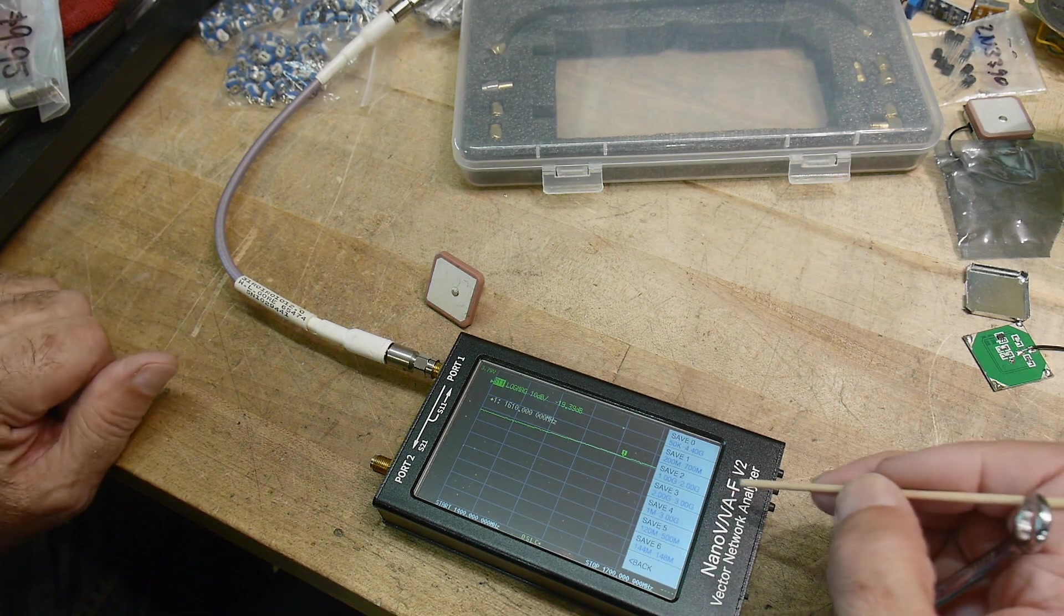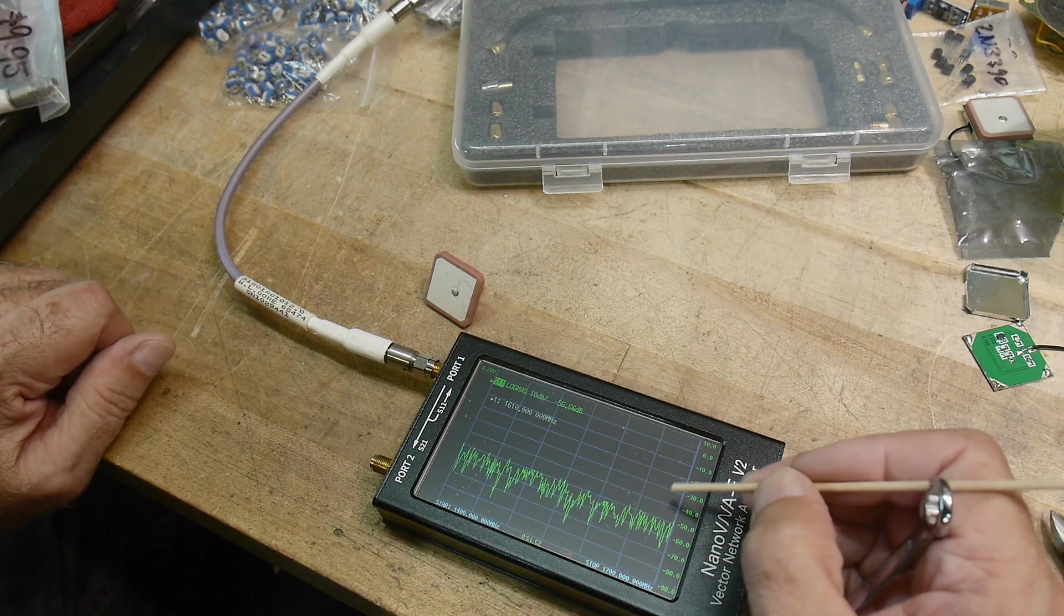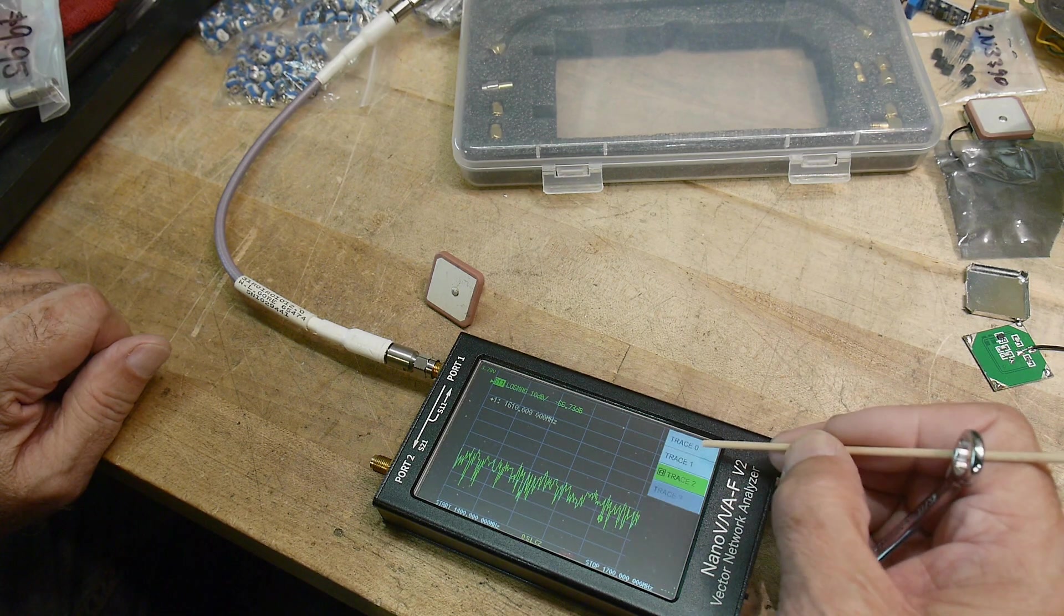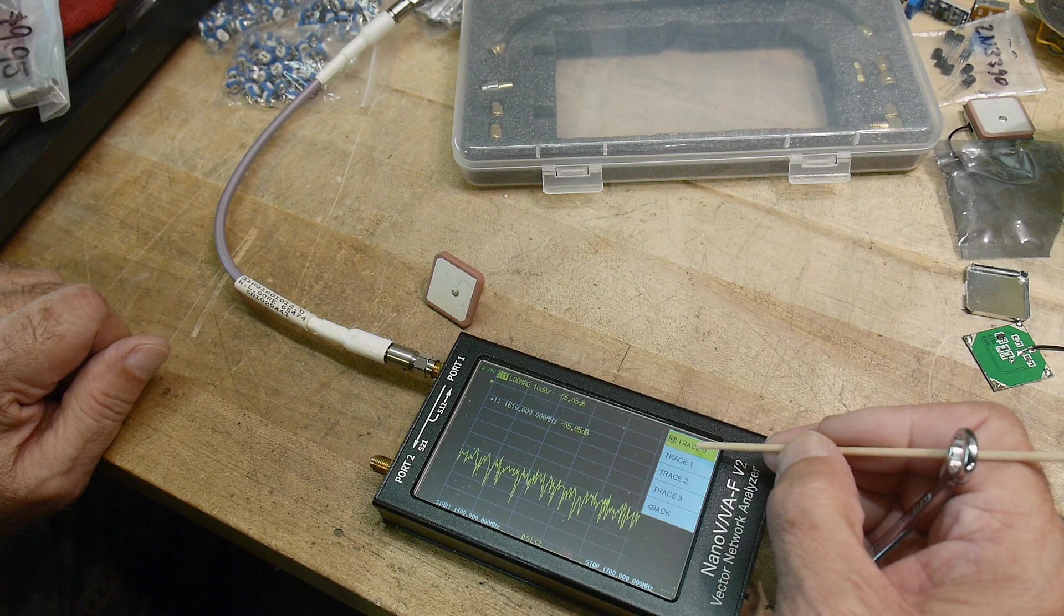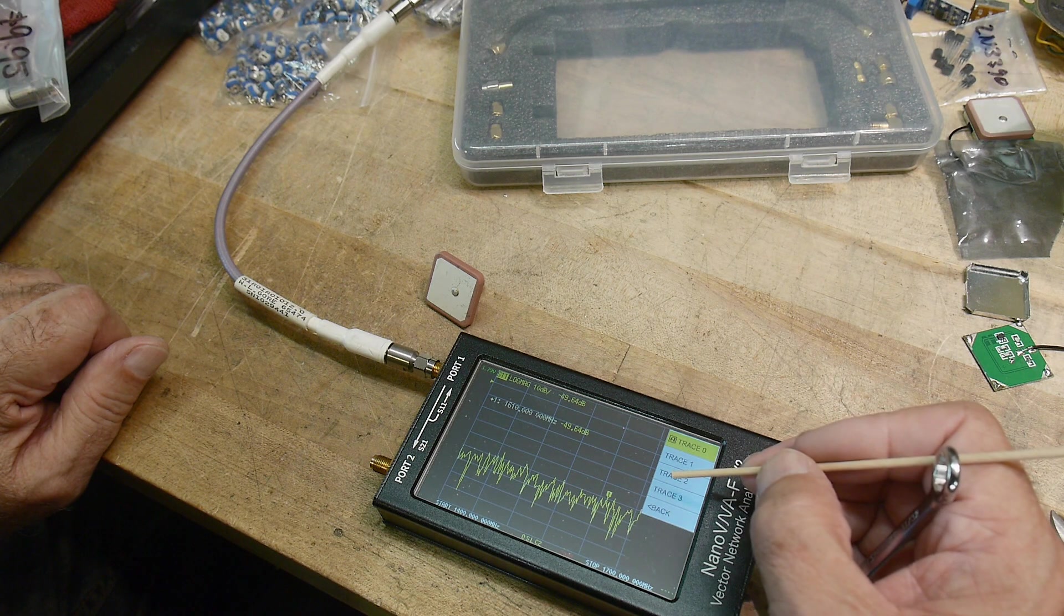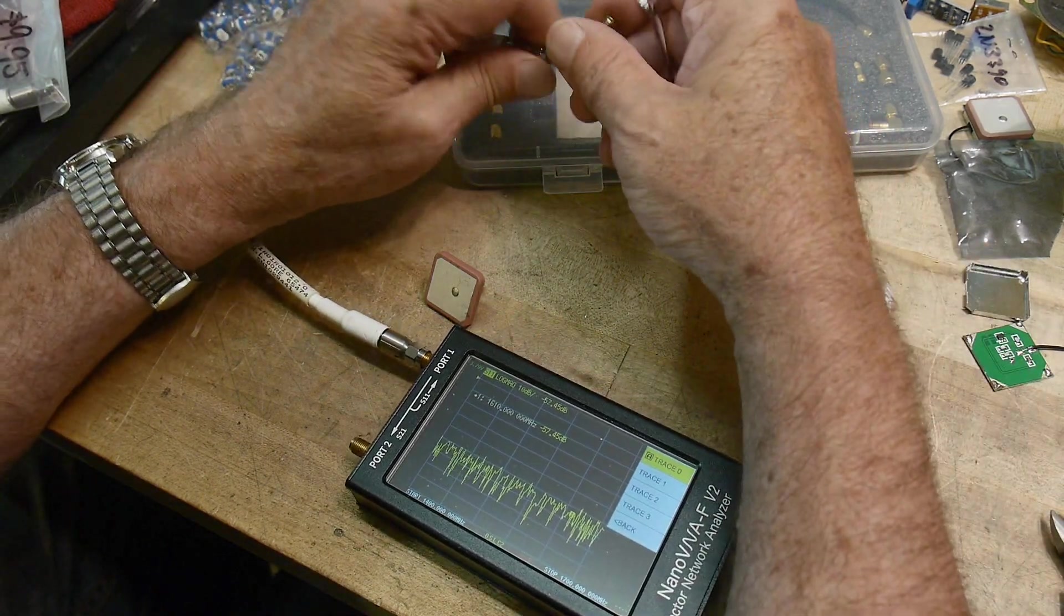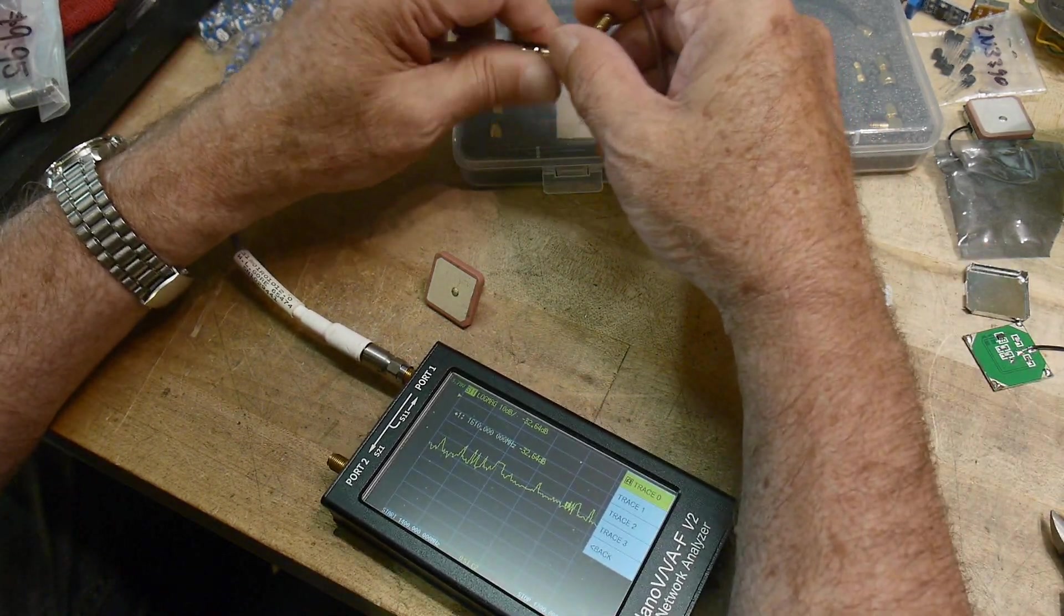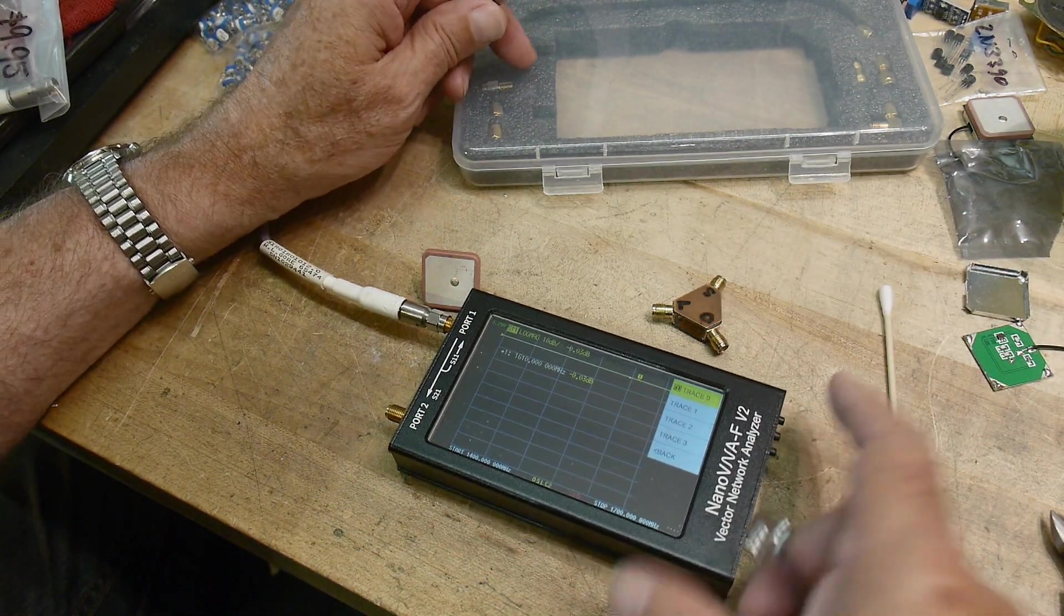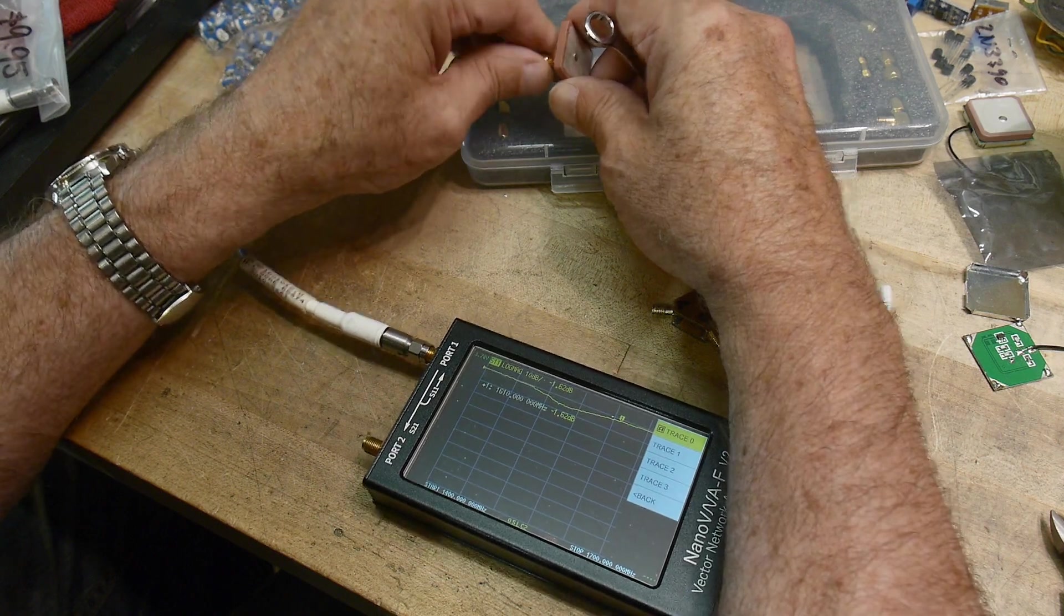So now let's go to display traces. Let's get rid of this. Trace zero is log mag, and when we disconnect this we should have a line up at the top. Yes, we do. I'll zoom in here so you can look at this better, but let me get the antenna on here first.